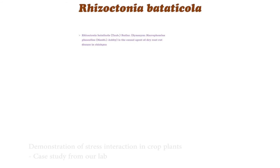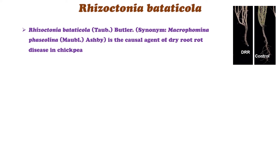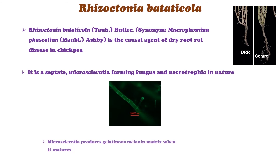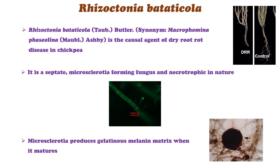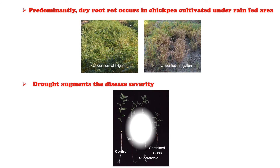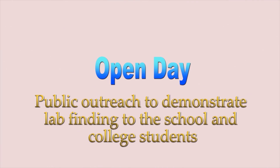Rhizoctonia bataticola is the causal agent of dry root rot disease in chickpea. It is a septate, microsclerotia-forming fungus, necrotrophic in nature. Microsclerotia produces a gelatinous melanin matrix when it matures. Dry root rot predominantly occurs in chickpea cultivated in rain-fed areas, and drought augments the disease severity.